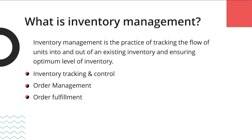The first one is inventory tracking and control, which largely covers tracking your products' availability based on quantity on hand, quantity committed, quantity ordered from vendors, and quantity received. The next is order management, which deals with creating and managing sales orders, purchase orders, bills, and invoices — and also, more importantly, automating your entire order-to-cash process.